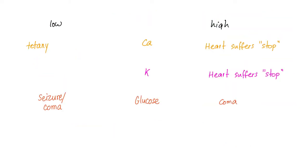To get an idea about tight regulation, take calcium for example. Very low calcium and you get tetanic convulsions. Very high calcium and your heart will stop. Potassium: very high potassium, your heart suffers; very low potassium can lead to muscle problems or heart problems. Glucose: low glucose causes seizures; high glucose can lead to coma, such as in hyperosmolar non-ketogenic hyperosmolar coma, and also diabetic ketoacidosis.